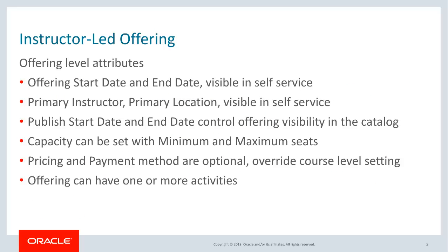Let's go into some more detail of an instructor-led offering. It is defined with the following attributes: offering start date, offering end date, primary instructor, and primary location. This information becomes available when a learner accesses the offering from the learning self-service. The published start date and end date control the offering visibility in the catalog, which can be used to show the offering for an appropriate duration. There is no point in showing classroom trainings that existed in the past.